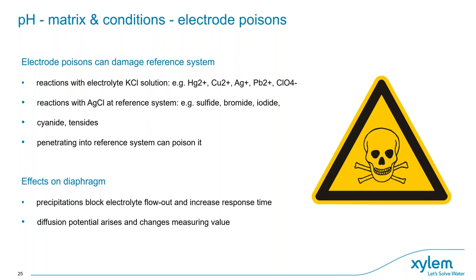So-called electrode poisons can damage the reference system if they get inside through the diaphragm. They reach the silver/silver chloride reference system via the electrolyte and react with it, causing wrong measurements or even permanent damage to the reference system. To avoid this, any solution from outside must not flow into the reference chamber. Therefore, the electrolyte level inside must always be higher than the sample level outside — ensuring flow out and not flow in.